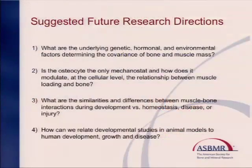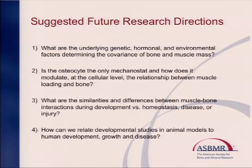Instead of asking all the speakers to address the questions — some of them did; the clinicians really paid attention and the basic scientists didn't, which is typical — we came up with our own list and we'll just go ahead and have a free-for-all. The first question is so general: what are the underlying genetic and hormonal environmental factors determining covariance of bone and muscle mass? Let's take that one later.